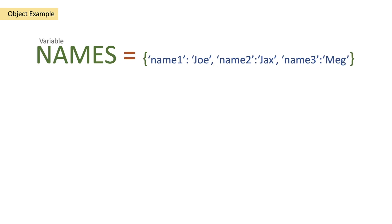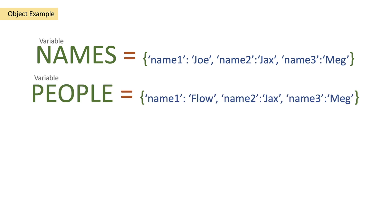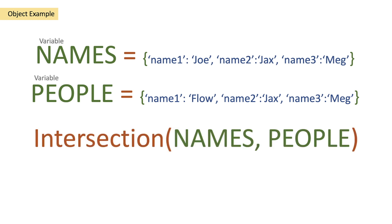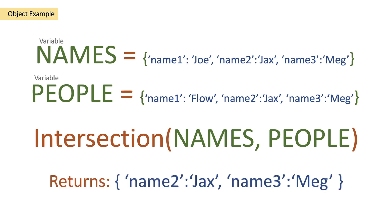You can also do this as an object. Let's create a names object: name one is Joe, name two is Jacks, name three is Meg. And let's create a people's object exactly the same except name one is going to be Flo instead of Joe. We pass both of these objects into the intersection function and we get a return of name two Jacks and name three Meg, because they occur in both objects.